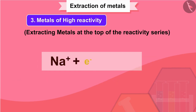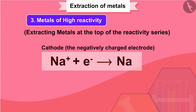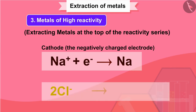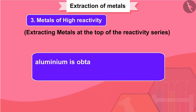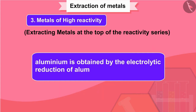The metals are deposited at the cathode, the negatively charged electrode, whereas chlorine is liberated at the anode, the positively charged electrode. Similarly, aluminium is obtained by the electrolytic reduction of aluminium oxide.